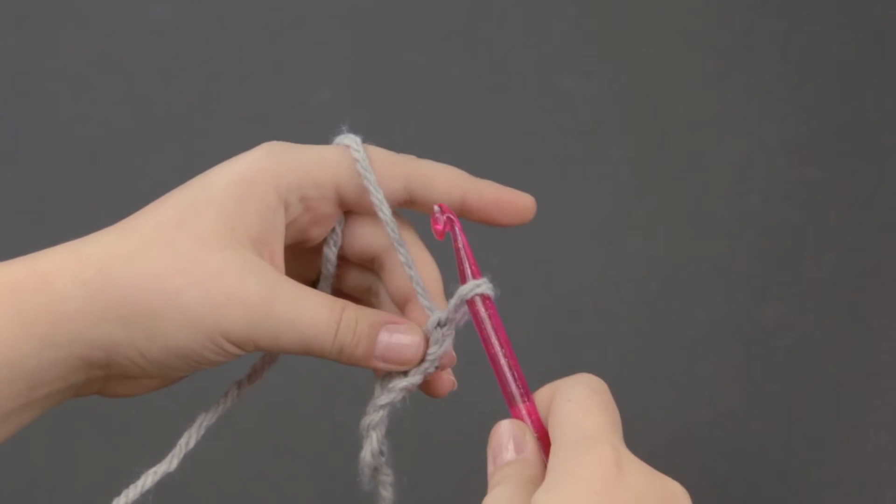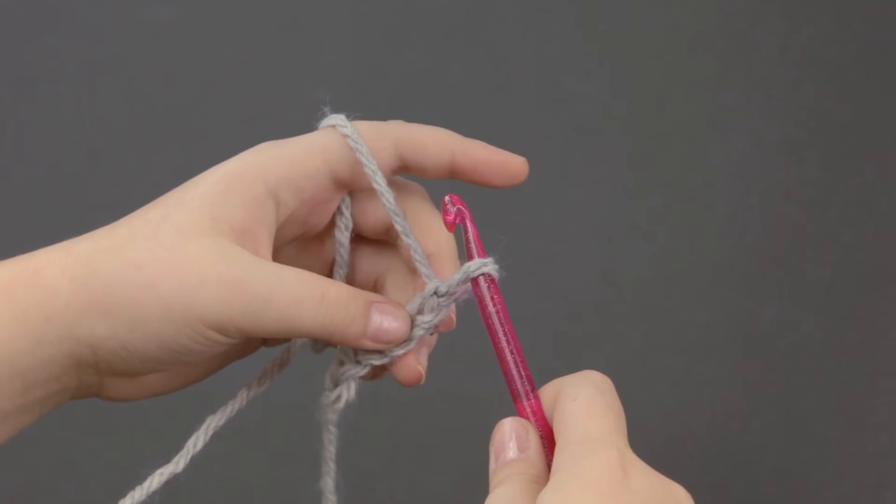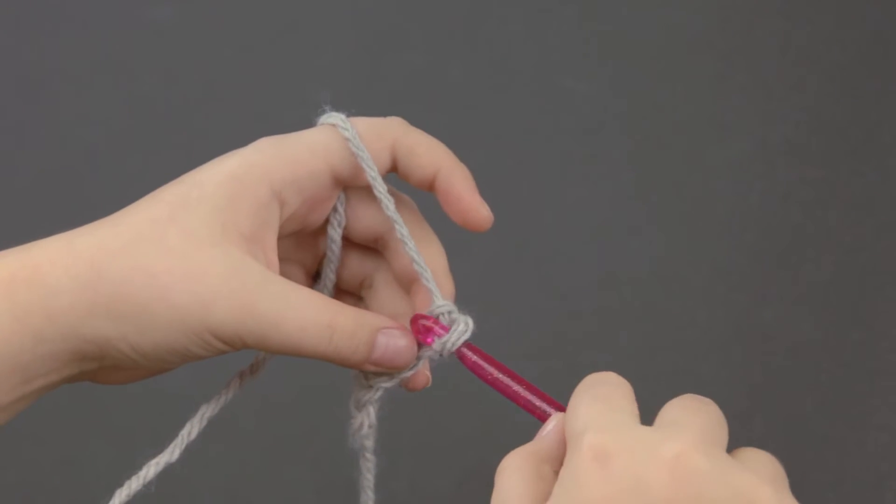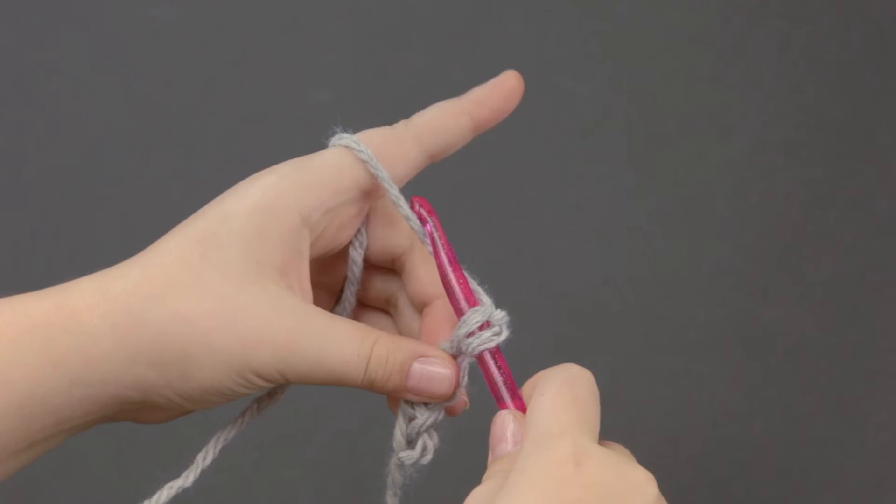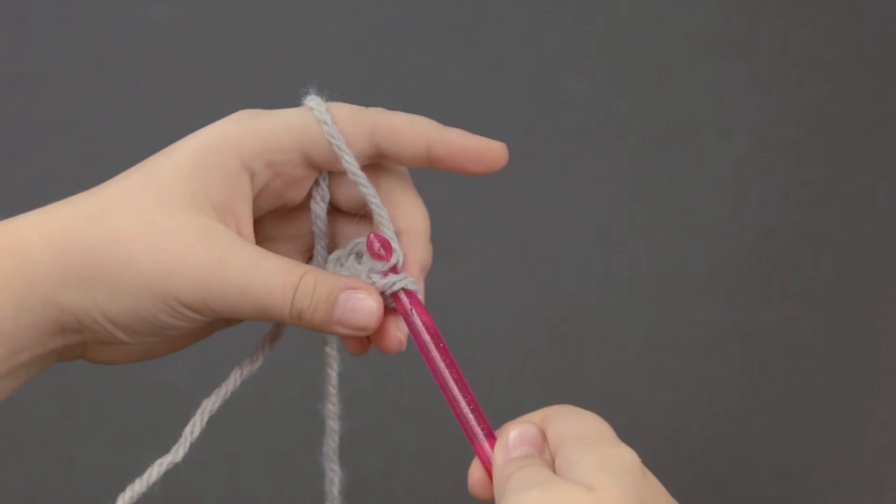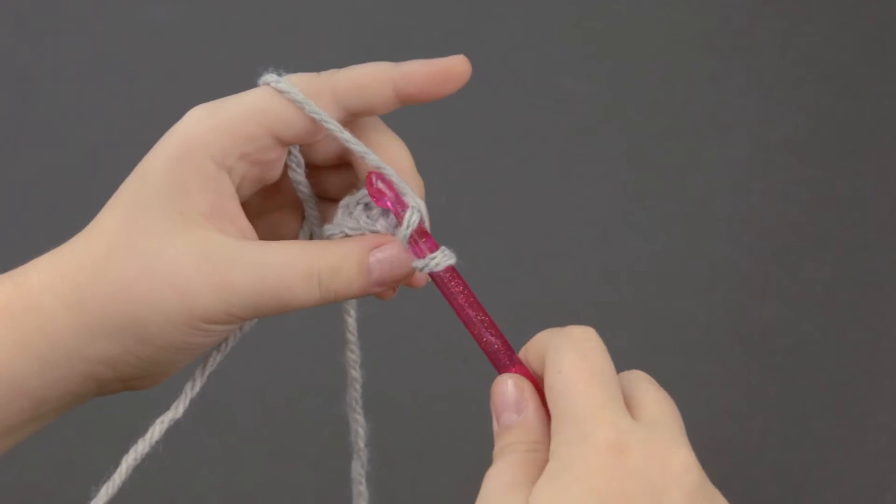Once you've made your chain, it's time to pick up the stitches. The loop on your nook counts as your first stitch. You're going to insert your nook into the second chain, and not the first one or else it will undo itself. You're going to catch the yarn and pull it through, keeping it loose. It should be able to move up and down the body of your nook.